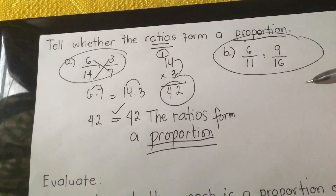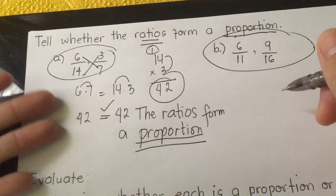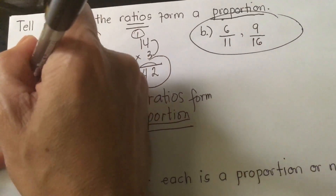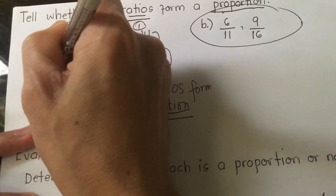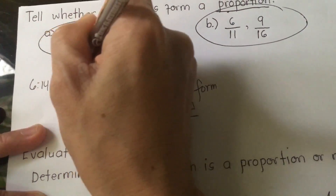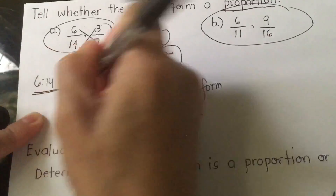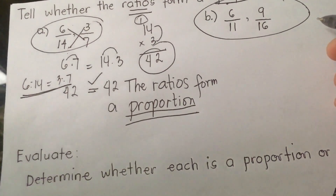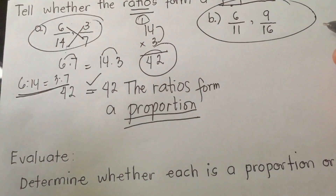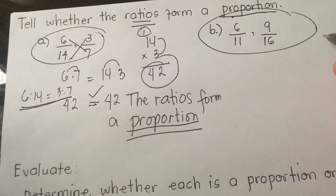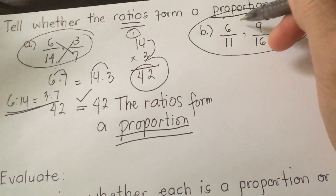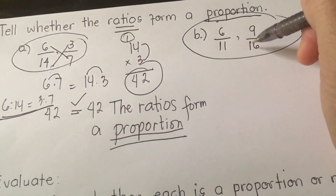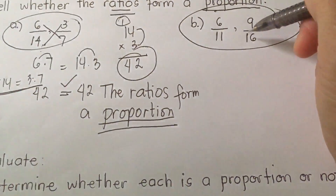This is a very good example. It states equality between the two ratios, 6 to 14 and 3 to 7 — this is in fractional form. Using the cross product method, you get the correct proportion. Now we proceed to letter B: 6 over 11 equals 9 over 16, or 6 is to 11 equals 9 is to 16. We are going to find out if this is still a proportion.